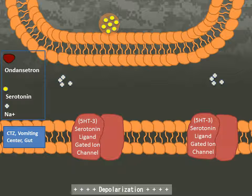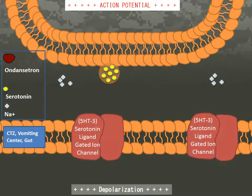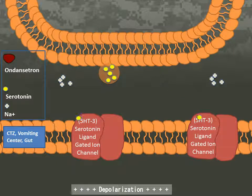Nausea and vomiting occur when afferent signals from the small intestine, vestibular system, or vomiting center reach the chemoreceptor trigger zone in the area postrema of the fourth ventricle. Surgical manipulation and/or certain anesthetics cause the release of serotonin from chromaffin cells, which then binds to 5-HT3 receptors in the small intestine or vomiting center.